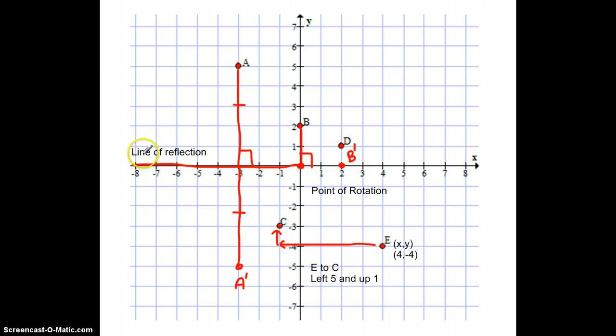We have a reflection, which reflects through a line of reflection at 90 degrees. And then we have a rotation, which has to rotate around a point of rotation. And those are the three transformations we look at in grade seven. Thank you.